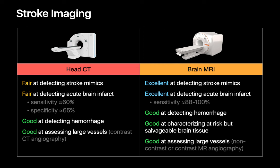Brain MRIs are our other option, and are much better than CT at distinguishing stroke from stroke mimics and detecting acute brain infarcts. They're good at detecting hemorrhage, plus they can also help us understand how much brain tissue might be involved but still salvageable with intervention. MRI is also good at assessing the patency of larger vessels.